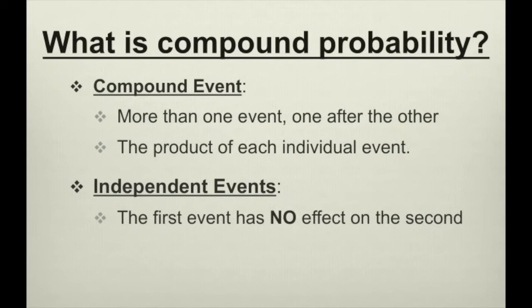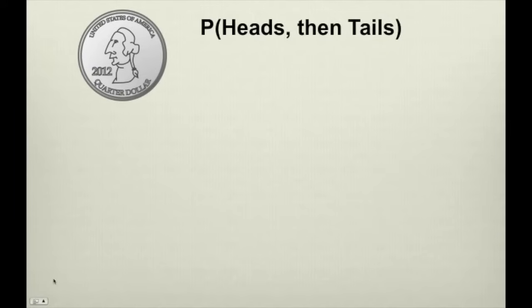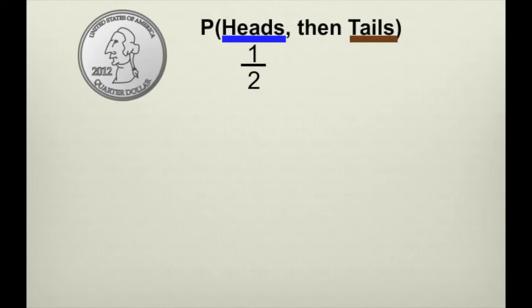Independent events are events where the first event has no effect on the second. For example, let's say we flip a coin twice. Compound probability is just like standard probability, but instead of one event, we have more than one — we can have two events or three events. In this example, we have two events: the first event is landing on heads, and the second event is landing on tails. The probability of landing on heads is one-half, and the probability of landing on tails is also one-half. We multiply those probabilities and get one-fourth.